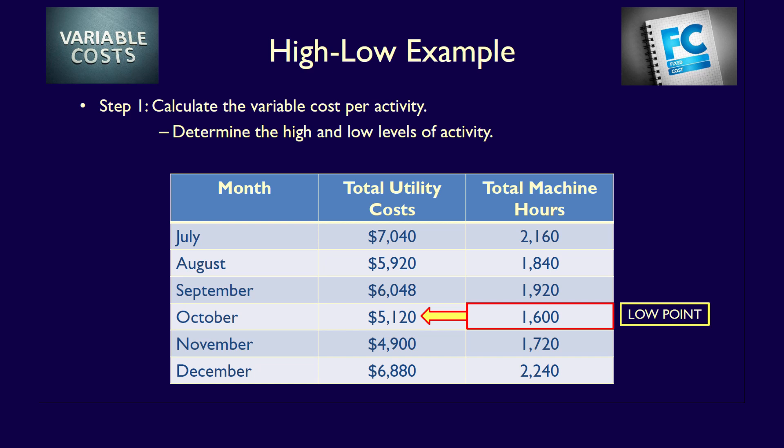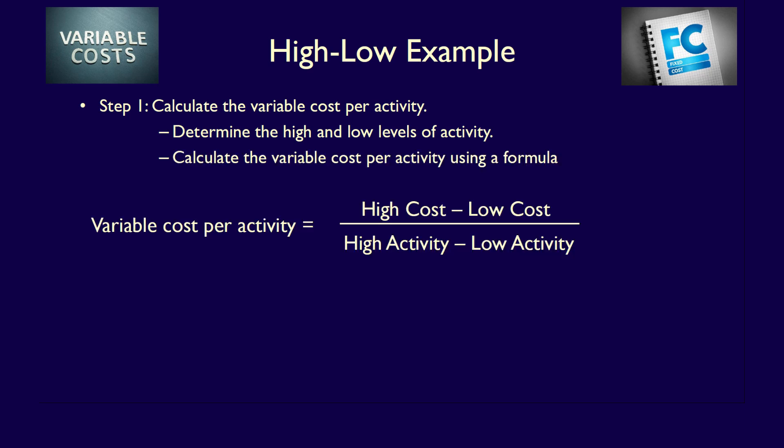Now we look at the high level of activity using machine hours. December is the highest at 2,240 machine hours, with related total utility costs of $6,880. Now we can apply a formula to determine the variable costs per activity — variable costs per machine hour. The formula is: variable costs per activity equals high cost minus low cost, all divided by high activity minus low activity. Note that the high cost and low cost refer to the costs related to the high and low levels of activity already determined.